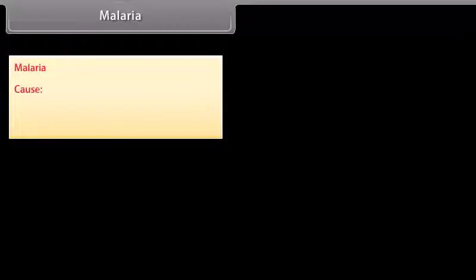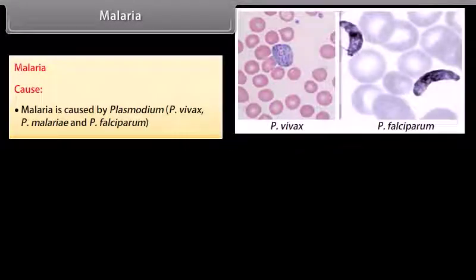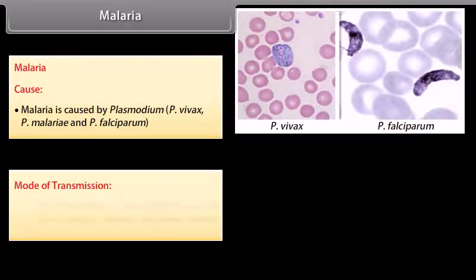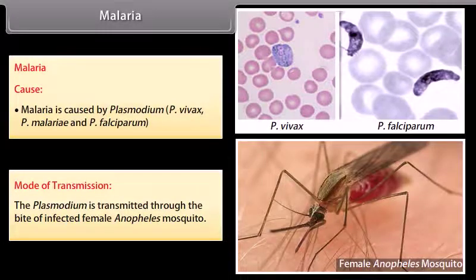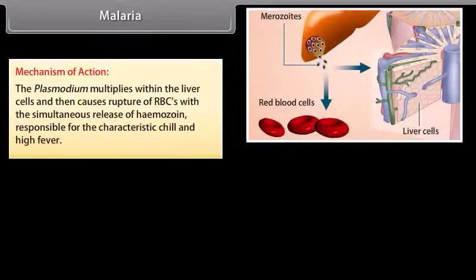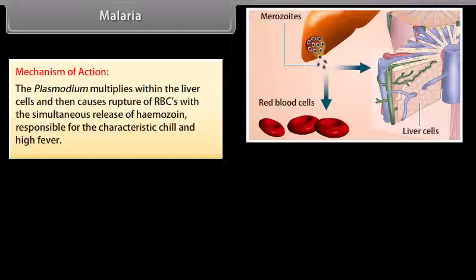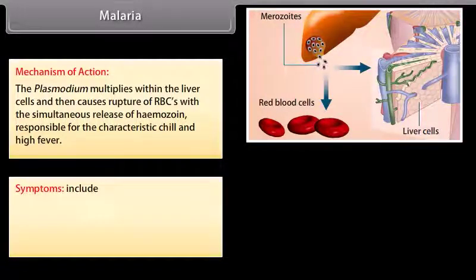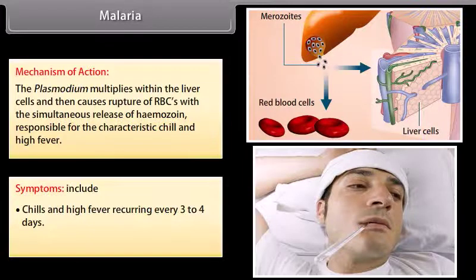Malaria is caused by Plasmodium — P. vivax, P. malariae, and P. falciparum. It is transmitted through the bite of an infected female Anopheles mosquito. The plasmodium multiplies within the liver cells and then causes rupture of RBCs with the simultaneous release of haemozoin, responsible for the characteristic chills and high fever. Symptoms include chills and high fever recurring every 3 to 4 days, and fatigue.